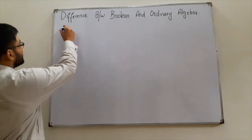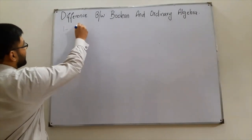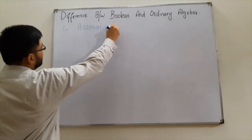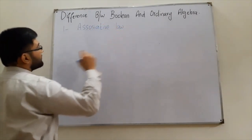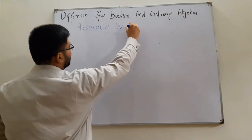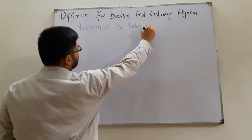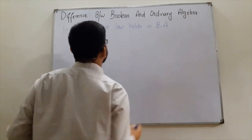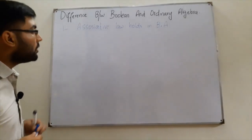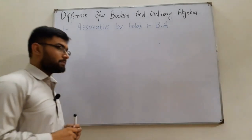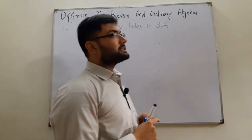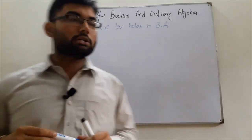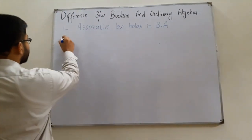The first point is about the associative law. I'll write BA for boolean algebra in short. The associative law holds in boolean algebra, whereas it is not mentioned in the Huntington postulates.